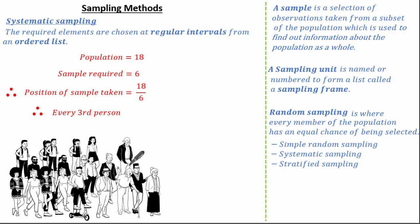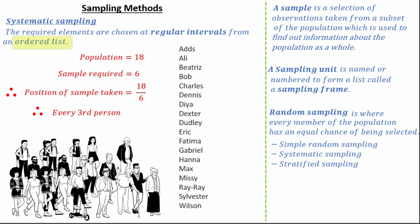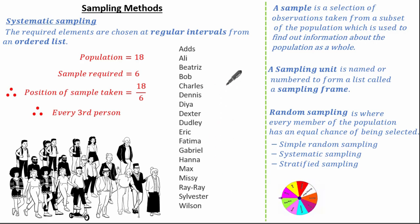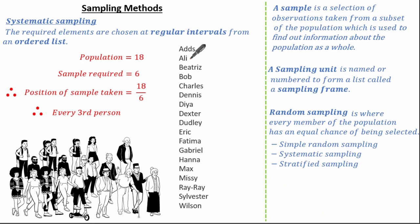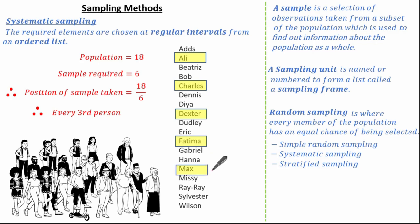First, we put our people or items in alphabetical order, because the definition of systematic sampling requires an ordered list. Then using a simple random sampling method — for example a spinner — we identify our starting person. Here the spinner identifies Ali, so from Ali we select every third person: Ali, then Charles, then Dexter, then Fatima, then Max, then Sylvester. This gives a total systematic sample of 6 people, which is what we wanted.